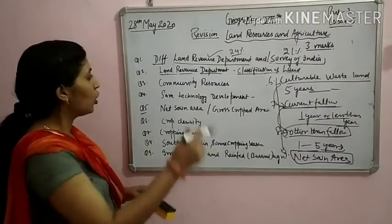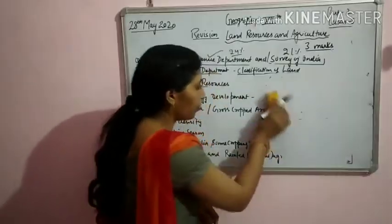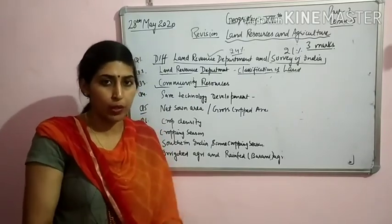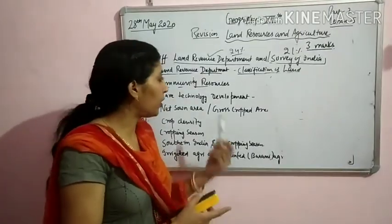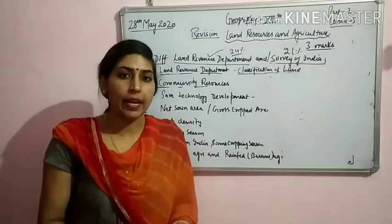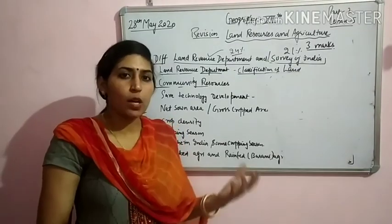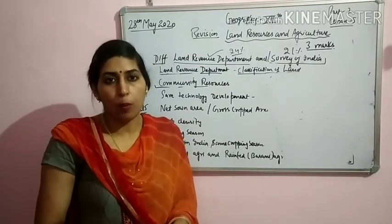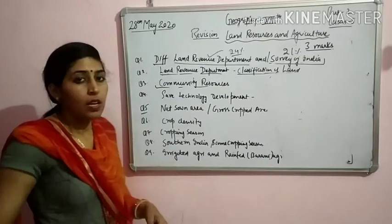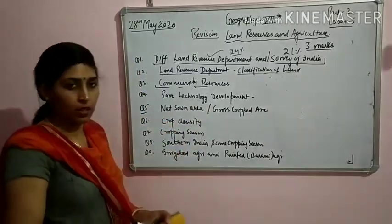Next: what is community resource? Community resources are resources that do not belong to any individual but to the entire community. For example, pasture lands — panchayati land where no single individual has rights, but the entire village has rights on that land. They can use it. A park is a community resource, a temple is a community resource. Pasture land is a good example — community resource means the right is of the whole community, not any individual.